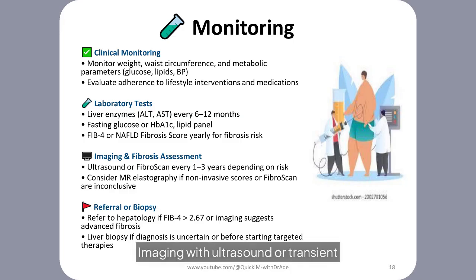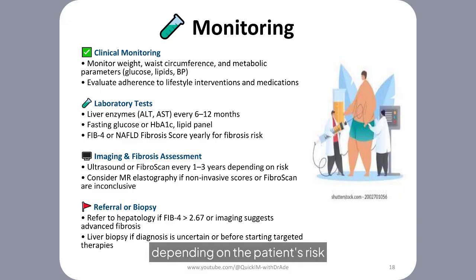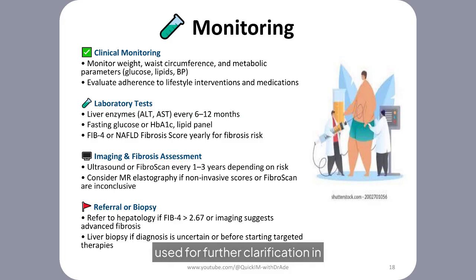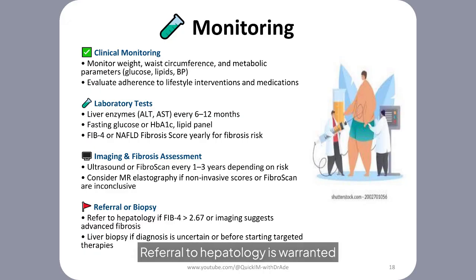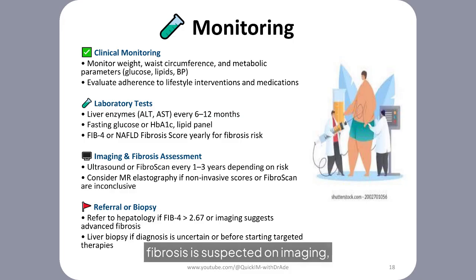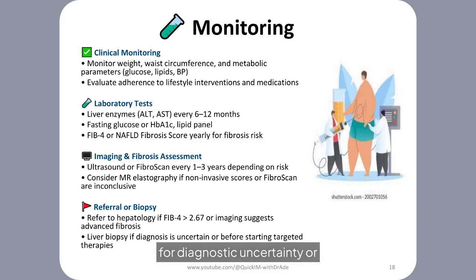Imaging with ultrasound or transient elastography, e.g. FibroScan, is recommended every 1 to 3 years depending on the patient's risk profile, and MR elastography may be used for further clarification in ambiguous cases. Referral to hepatology is warranted if FIB-4 exceeds 2.67, if advanced fibrosis is suspected on imaging, or if portal hypertension signs are present. Liver biopsy is reserved for diagnostic uncertainty or treatment decisions in high-risk patients.